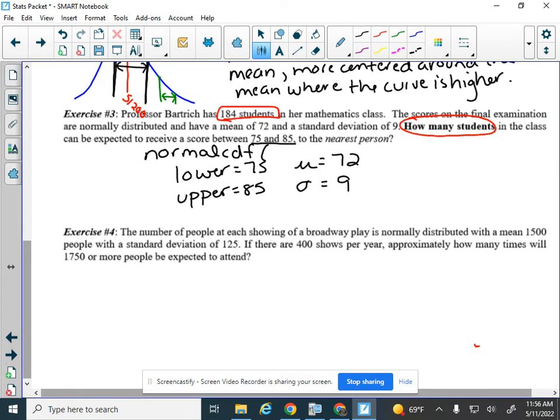So our lower is 75, our upper is 85, and our mean is 72, and our standard deviation is 9. So if I went through on the calculator and typed all that in, that would give me that the probability of getting between a 75 and an 85 is 0.295. Now, if I want to know the number of people, this is about 29.5%, okay? So I'm going to take that number, and I'm going to multiply it by the number of people. So we're going to do 0.295 times 184 to get approximately 29.5% of 184 people. So we're expecting 54 students to get scores between 75 and 85.